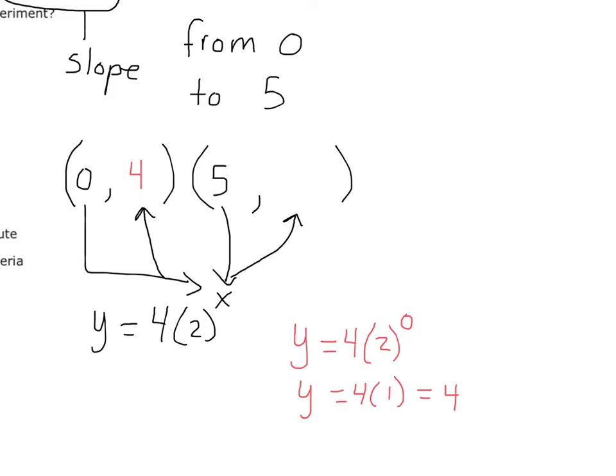So now let's input 5 into the function. So I've got y equals 4 times 2 to the 5th power. So now I need to calculate, well, what is 2 to the 5th power? 32. So I'm doing 4 times 32, which is 128. So there's my two points.